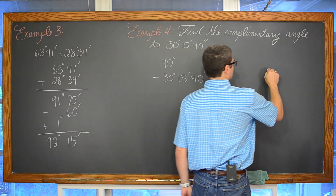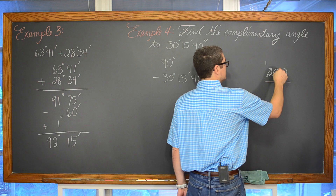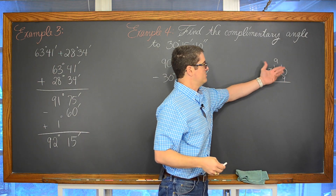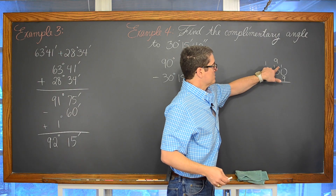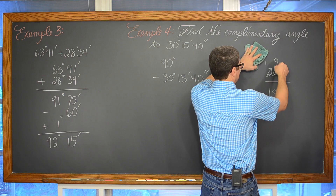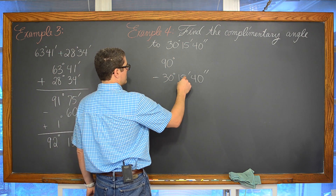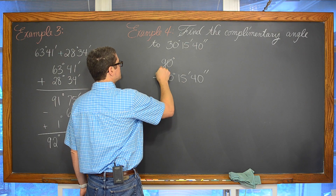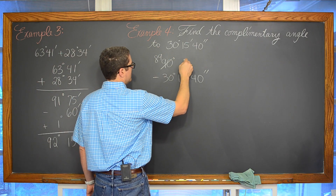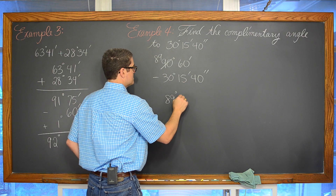Just like regular subtraction, except we are not in base 10 — we are borrowing in base 60. I don't have anything to subtract the 15 minutes from zero, so let's borrow a degree — make that 89 degrees — and in its place add 60 minutes. Now writing that as 89 degrees and 60 minutes. But I still don't have anything to subtract the 40 seconds from. So we borrow a minute, bringing that down to 59 minutes, and add in its equivalent — 60 seconds.